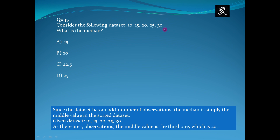Consider the following data set with five data points: 10, 15, 20, 25, and 30. We are given five observations and need to find the median. The data set is sorted into ascending order. Since the data set has an odd number of observations, the median is simply the middle value in the sorted data set, which is 20. Option B is the right answer.